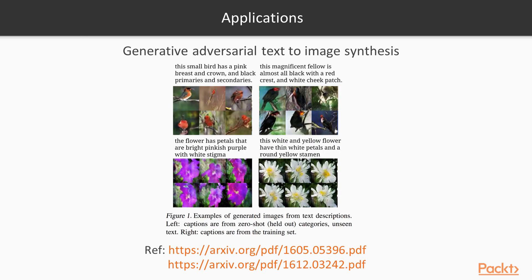One also very interesting application is text-to-image synthesis. You type a caption and you can generate an image from it. For example, in the top left corner they described a bird with a pink breast and crown and black primaries and secondaries, and the network is able to generate an image that looks like what was described. Similarly, a description of flowers with bright pinkish-purple petals with white stigma produces a matching generated image.